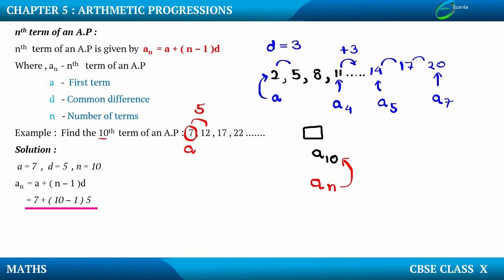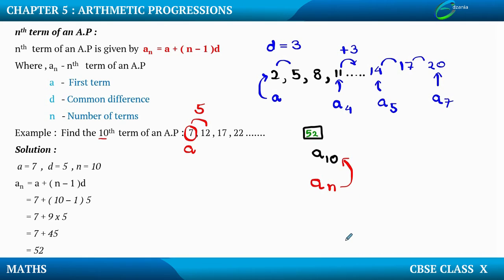We have the formula an = a + (n-1) × d. Substituting: 7 + (10-1) × 5. So 10 minus 1 is 9, giving us 7 + 9 × 5. Always remember to apply the BODMAS rule — multiplication comes first. So 9 fives are 45, and 45 plus 7 is 52. We got the tenth term of this AP as 52.